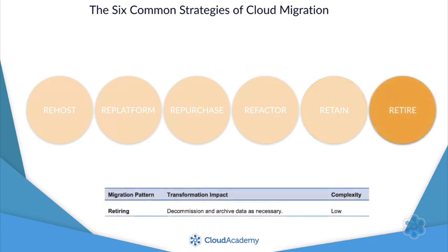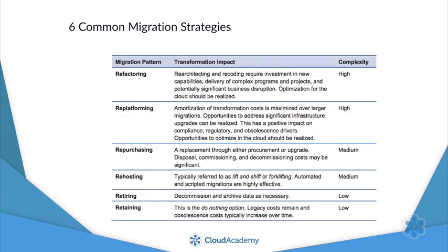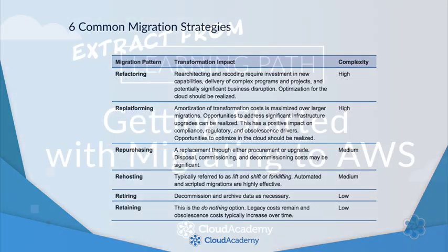That brings us to strategy number six, which is to retire services. This strategy involves identifying assets and services that can be turned off, so the business can focus on services that are widely used and of immediate value to the business. That brings us to the end of our brief summary of the six common migration strategies.